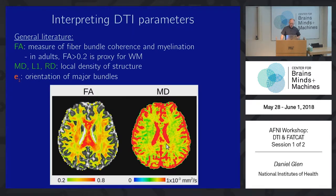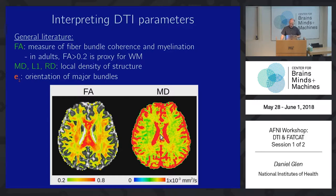This is what some of these images look like. Generally, what we use is a fractional anisotropy of at least 0.2 as a proxy for white matter. This is a map of fractional anisotropy, and if we just mask at 0.2, we can see that it follows the white matter contours. Mean diffusivity is throughout and is generally higher in the gray matter and in the ventricles.